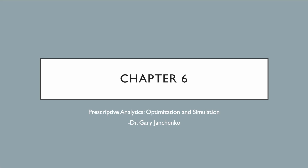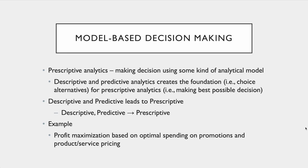Hey everybody, this week we are going to take a look at chapter six in our book around prescriptive analytics. We'll take a look at the first half of this chapter, breaking it into two, and then take care of the second half next week. Getting started, we're going to talk about model-based decision making — taking a look at data we've gathered and figuring out a model that is representative of what we're trying to do.